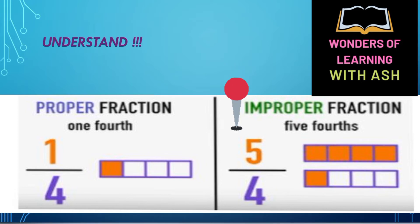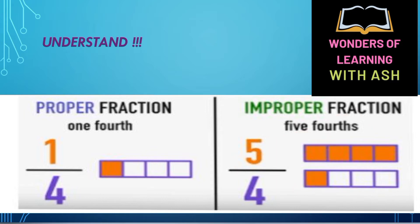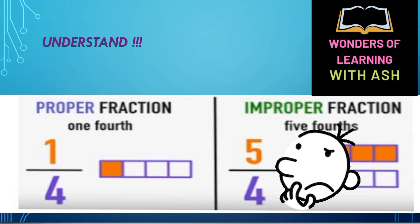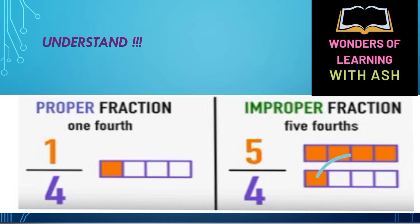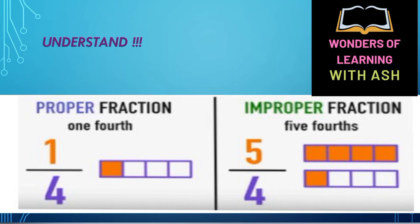We will say five-fourths. Why do we say a complete whole? If we only have 4 parts in one circle, we cannot shade 5 parts. That's why we take another whole, which also has four parts. We give one whole completely shaded, and then one part of the next whole is shaded. This gives us five-fourths. Viewers, you can see this is a pink circle.